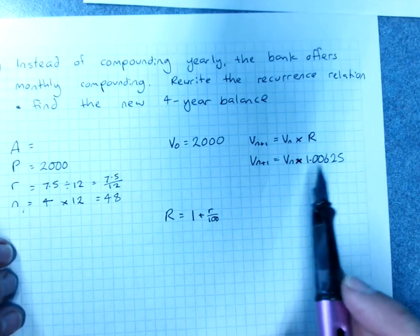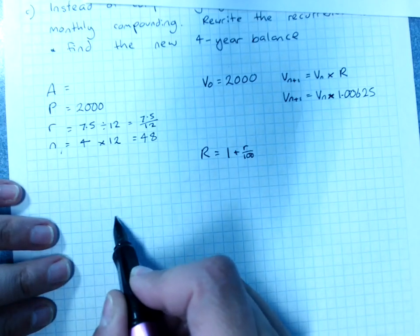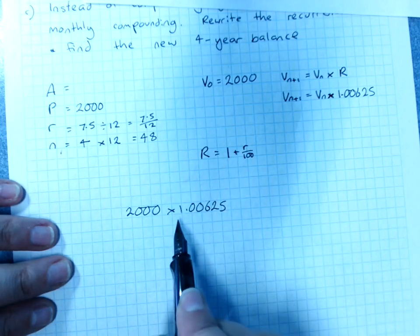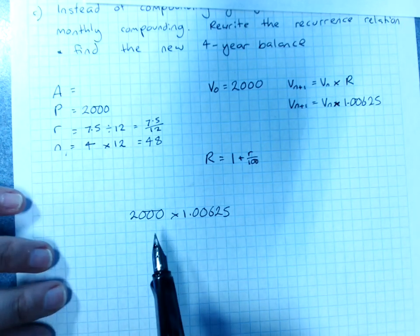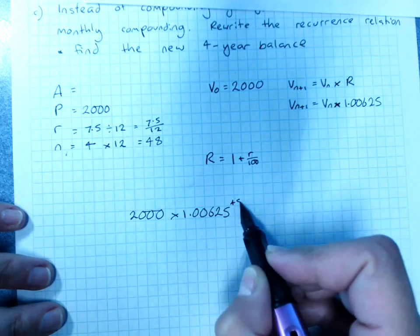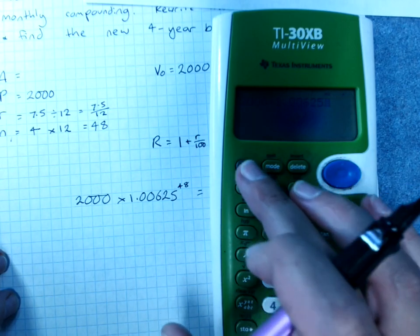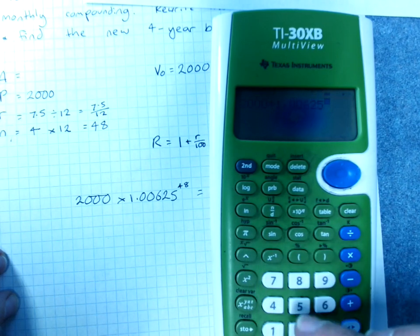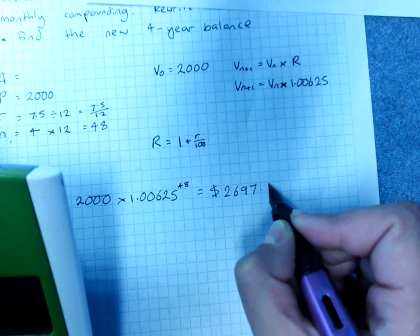So that's your new recurrence relationship when it's compounding monthly. Now, obviously, I don't want to do that recurrence method for 48 months. But 2000 times 1.00625, we'd have to multiply by 1.00625 forty-eight times. So you think times it by 1, times it by 2, times it again and again and again. You can just do to the power of 48 and you'll get your answer. 2000 times 1.00625 to the power of 48. And I need a new calculator, 2697.20.